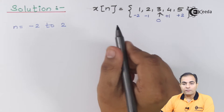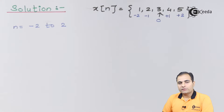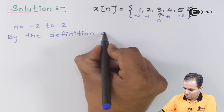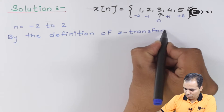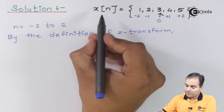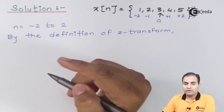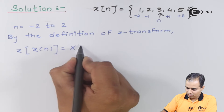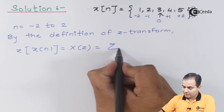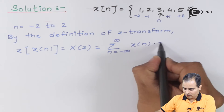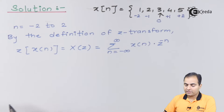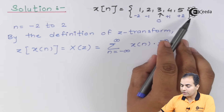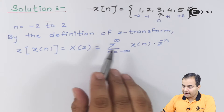Now we will first find the Z-transform, then move on to the ROC. According to the definition of Z-transform, Z{x(n)} is represented as X(z), and the formula is the summation of x(n) times z to the power minus n. Since our function is available from minus 2 to plus 2, the summation also changes from minus 2 to plus 2.